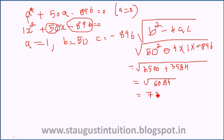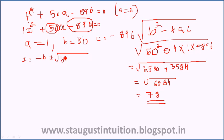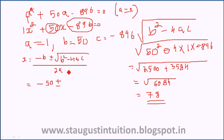The square root of the discriminant is 78. Now applying the quadratic formula: x equals minus b plus or minus root of b squared minus 4ac, all divided by 2a. So x equals minus 50 plus or minus 78, divided by 2.